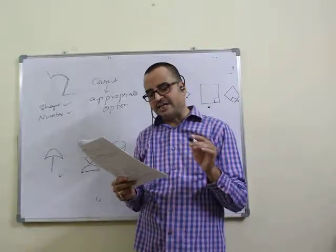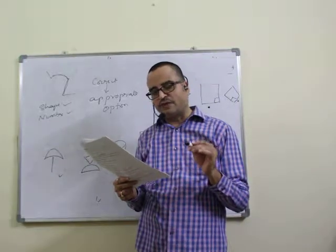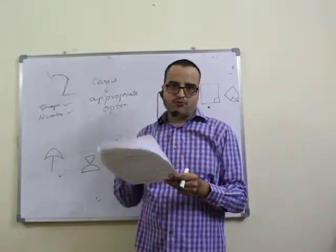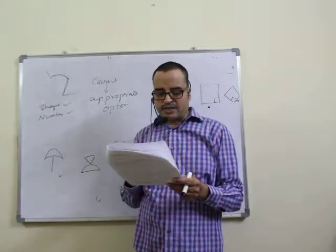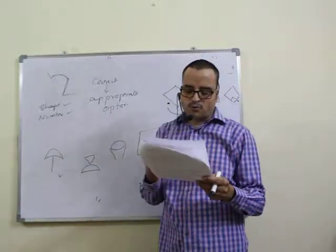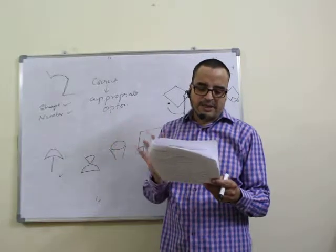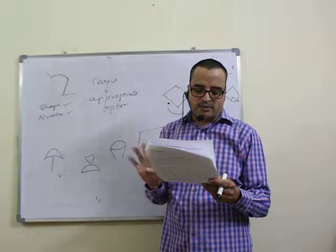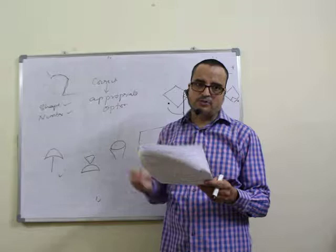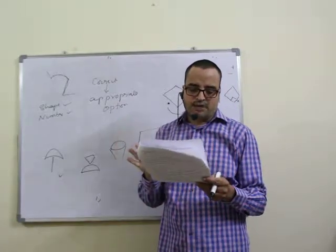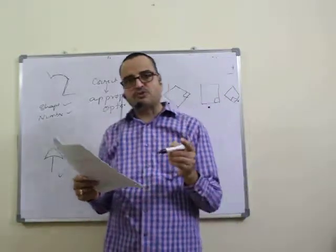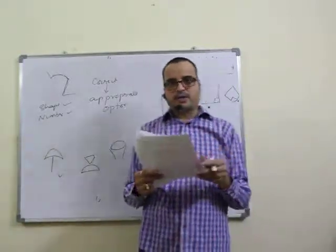Question twenty-five: pieces are given and you must identify which option forms the complete figure. Total five pieces are given. Based on size, third and fourth options are ruled out. Checking first option — it would need six pieces, but we only have five. So the answer is second option — twenty-fifth question, second option.